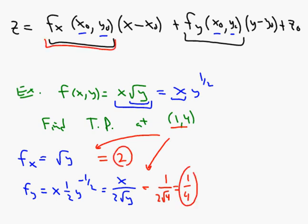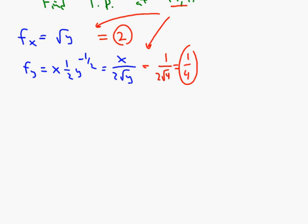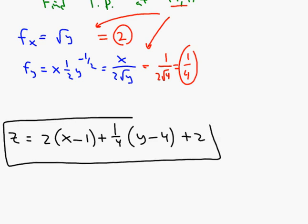Those are the slope pieces of the formula. We just need z₀. To get z₀ we compute f of 1 comma 4, which is 1 times the square root of 4, or just 2. Now we can put this all together. The equation of the tangent plane is: z equals 2 times x minus 1 plus one-fourth times y minus 4 plus 2. That's the equation of our tangent plane.